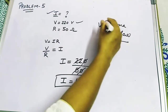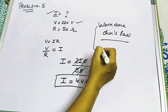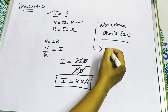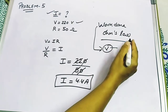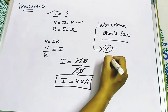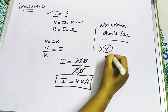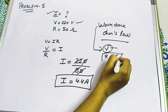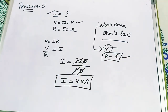One thing to keep in mind: when calculating work done, for potential difference you always subtract where you have come from from where you have reached. This is the simple rule to follow. In the next video we are going to discuss problems related to resistance and resistivity. Thank you.